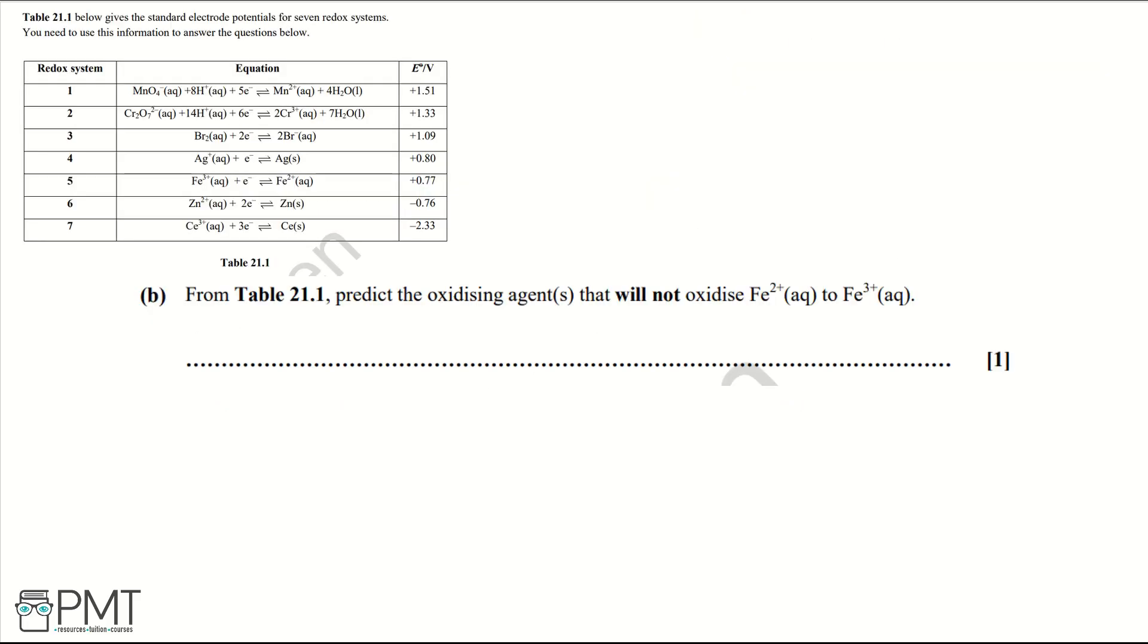Part B: From Table 21.1, predict the oxidizing agent or agents that will not oxidize Fe2+ aqueous to Fe3+ aqueous.